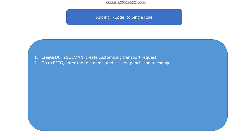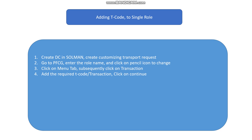Go to PFCG, enter the role name, and click on the pencil icon to change. Click on the menu tab, then click on the transaction plus sign. Add the required T-code and click on the green checkmark or click on continue.